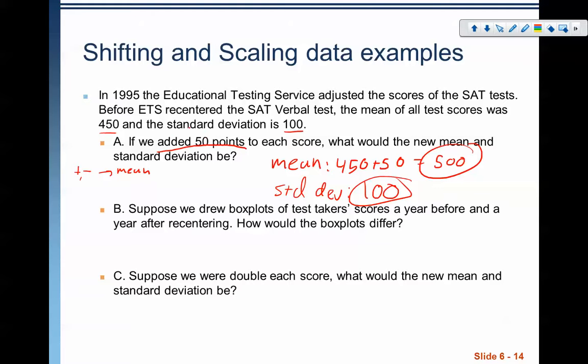All we did was shift the new center. The new center is at 500 instead of 450. Part B: Suppose we drew box plots of the test taker scores a year before and a year after re-centering. How would the box plots differ? They would be the same except centered at 500 instead of 450. This is because the standard deviation is not being influenced by the addition and subtraction. The spread isn't changing. The shape isn't changing. It is simply a difference in where the center is at or where all of our measures of position are.